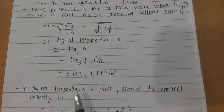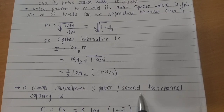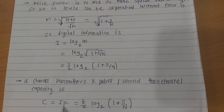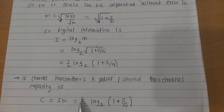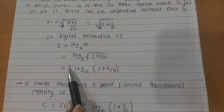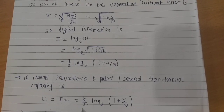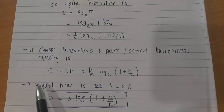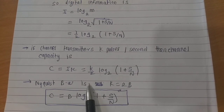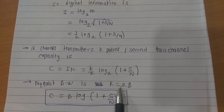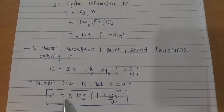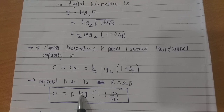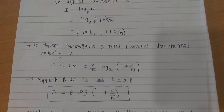If the channel transmitter sends K pulses per second, then the channel capacity will be C = K × (1/2) log₂(1 + S/N). As per the Nyquist criteria, bandwidth B satisfies K = 2B, so the channel capacity becomes C = B log₂(1 + S/N).